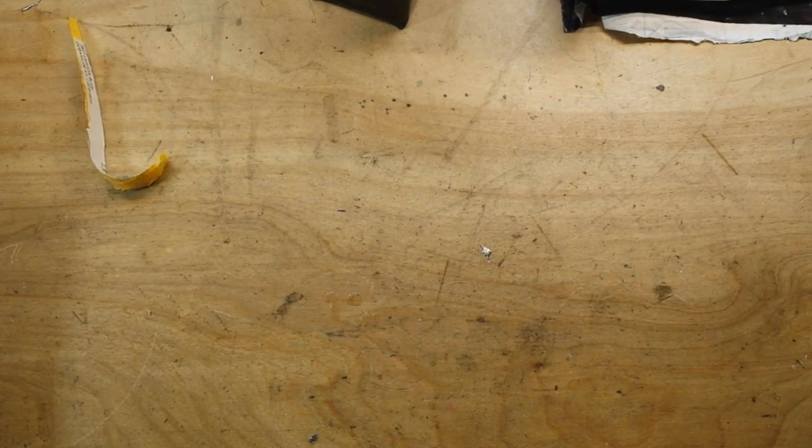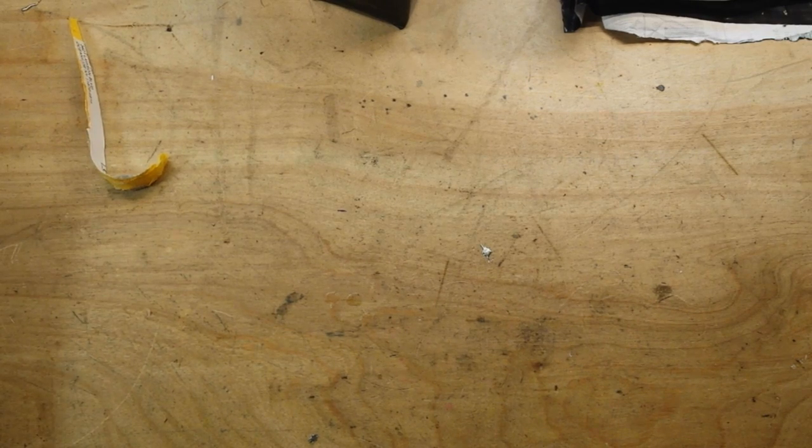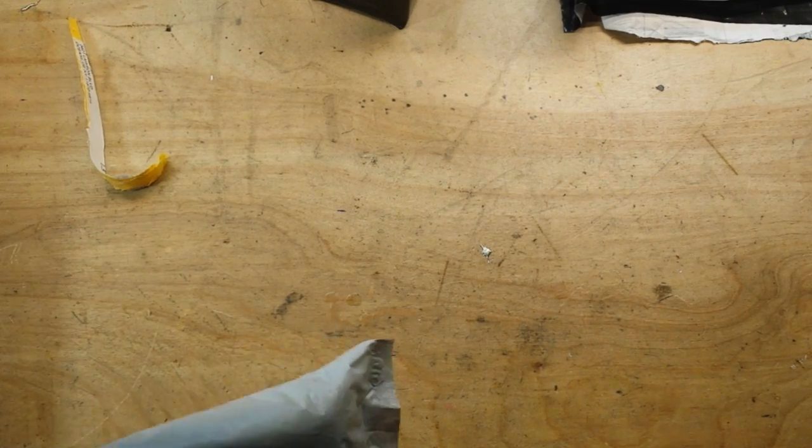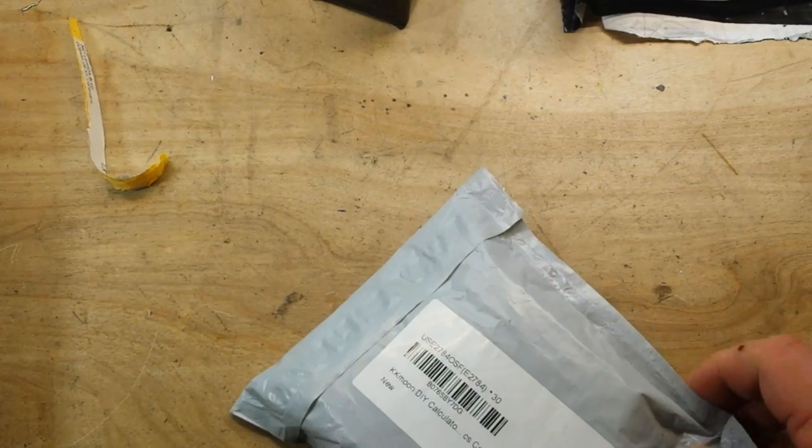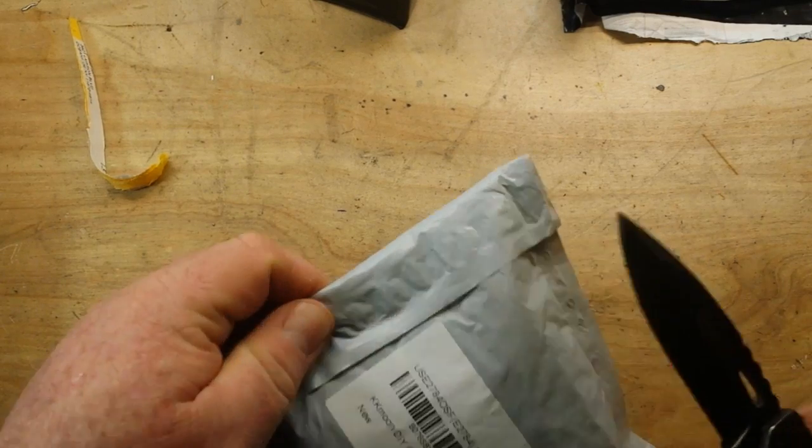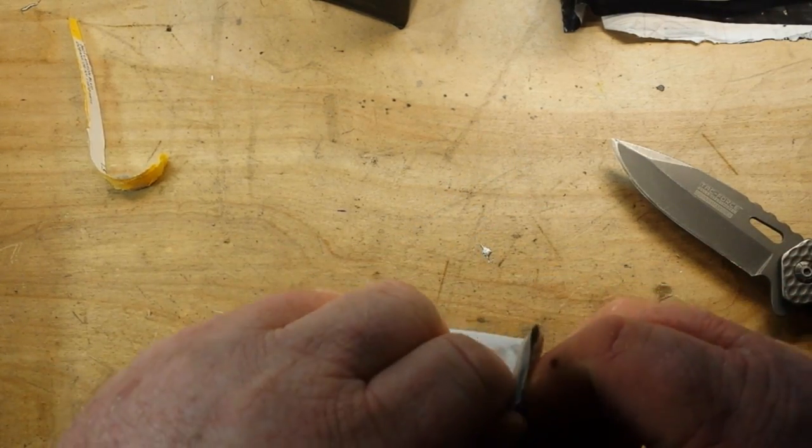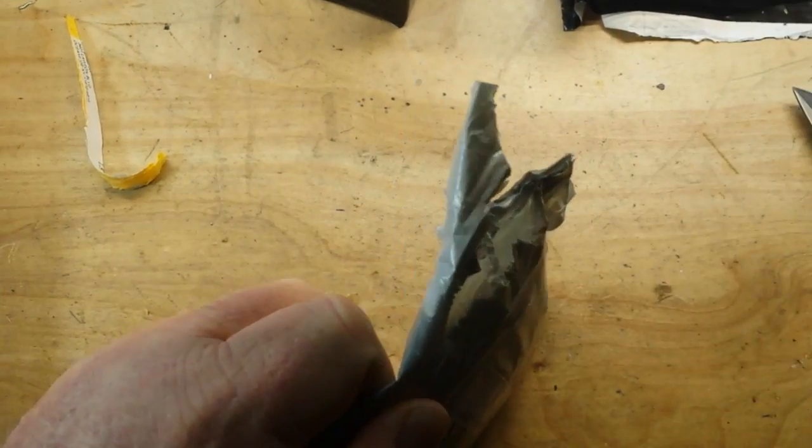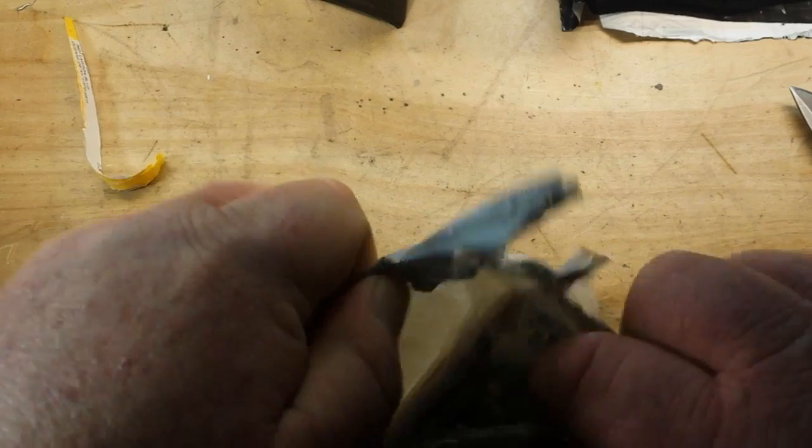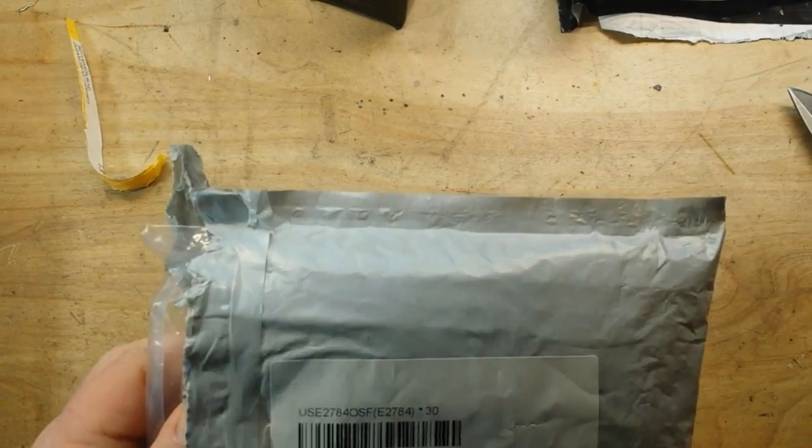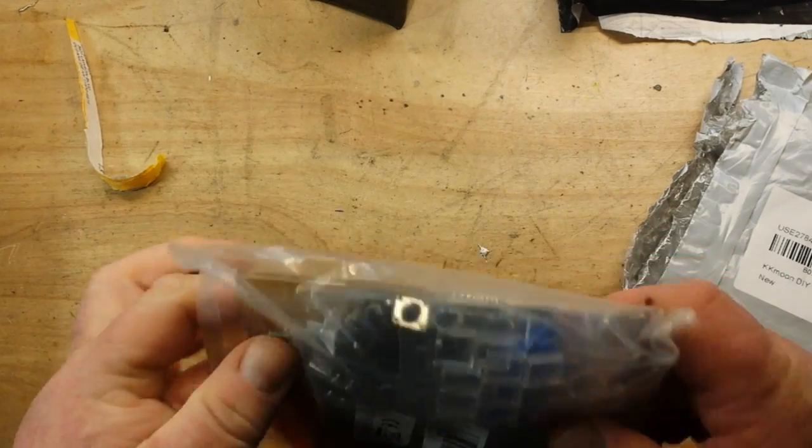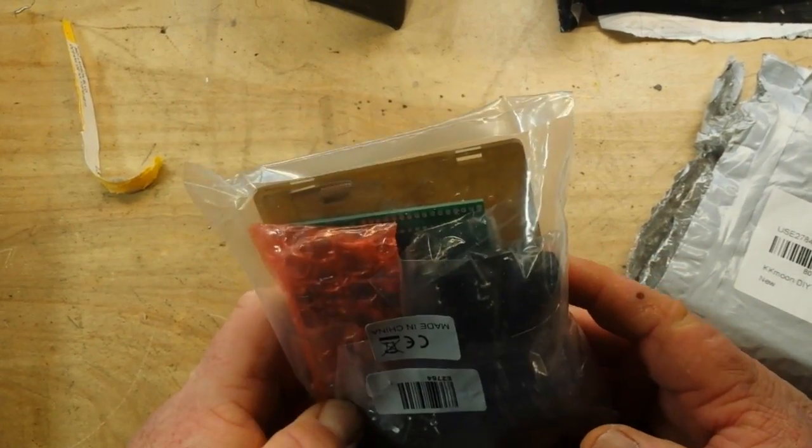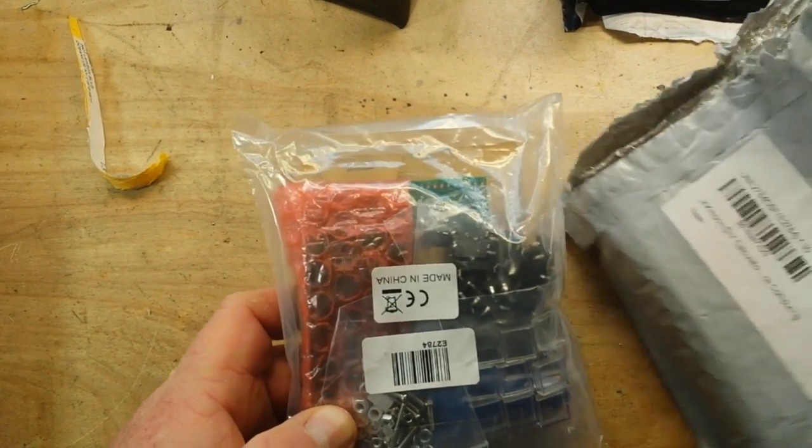Now we've got two things that were sent in by a viewer named Anonymous Greg, so thank you very much Anonymous Greg. Careful how I open this because I don't know where wrapping ends and product begins. So this is a calculator kit which has some electronic functions to it, I believe. That will be fun.